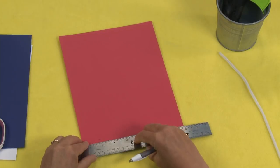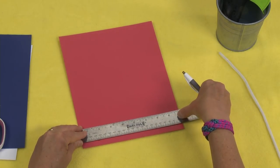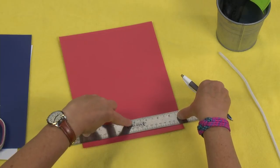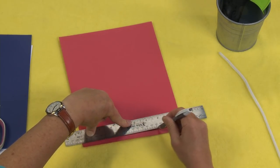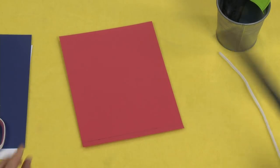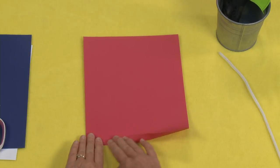I'm going to take my ruler and line it up so that I have a straight line, and then I'm going to draw across to create that line. I only have to do this once, and the reason I'm doing that is to create my fold line.